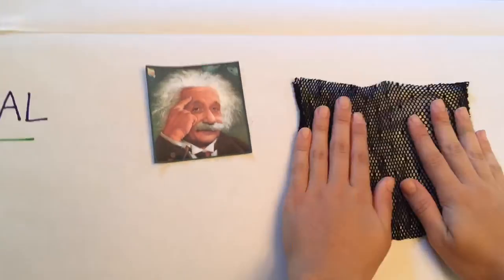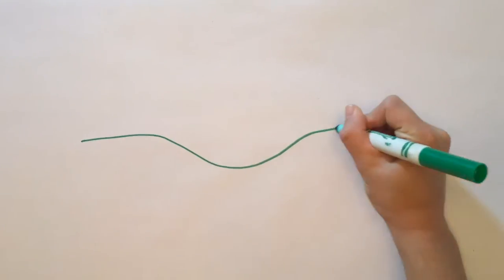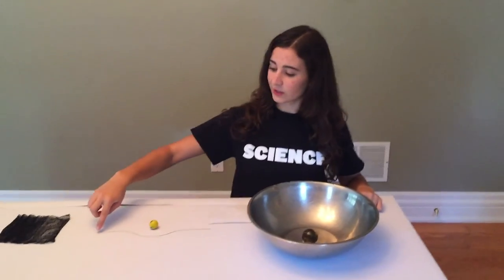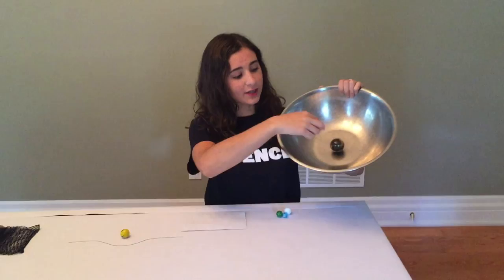According to Einstein, the fabric of spacetime is like a mesh that can be stretched or compressed in every direction. A large mass, such as a star or planet, causes the warping of this spacetime. This bend or curve can be compared to a large marble in the center of a bowl.